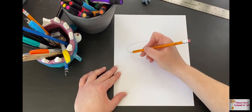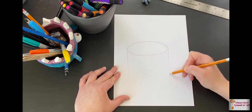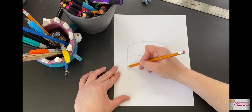Okay, so now we're gonna do two lines straight down. You can use a ruler. You can eyeball it. It's up to you.